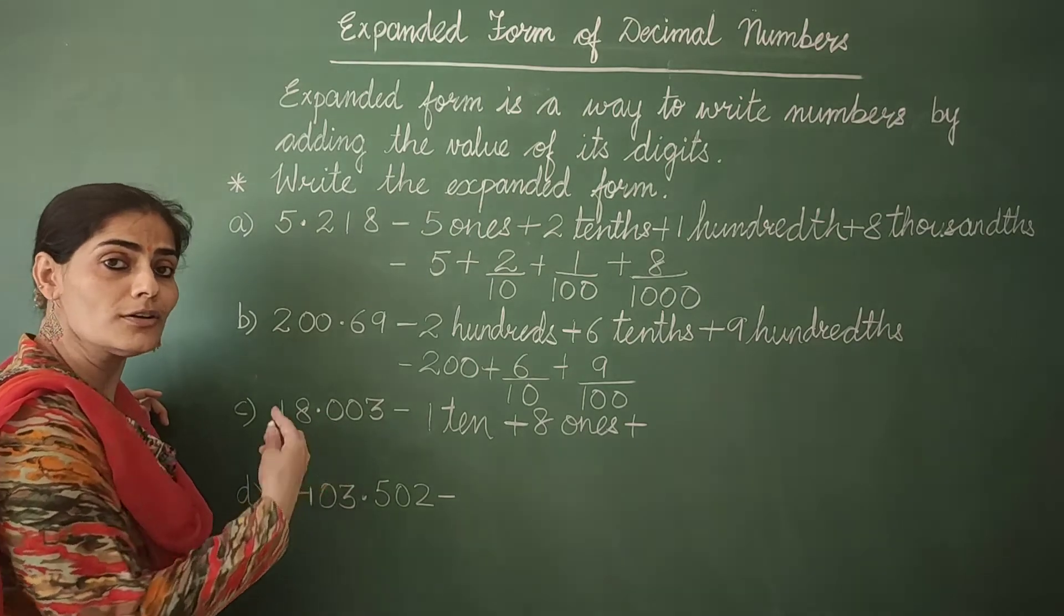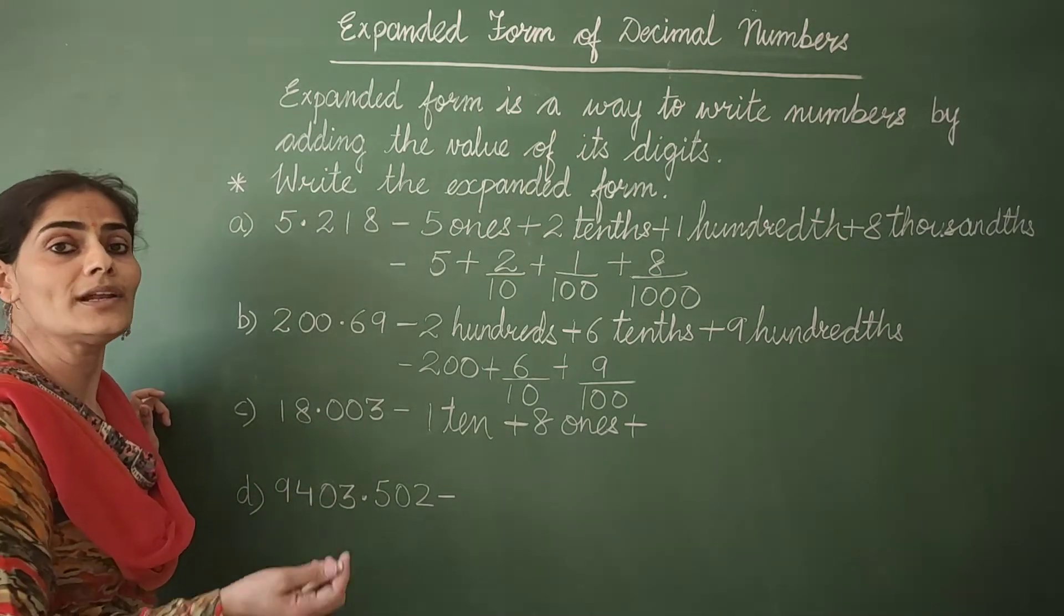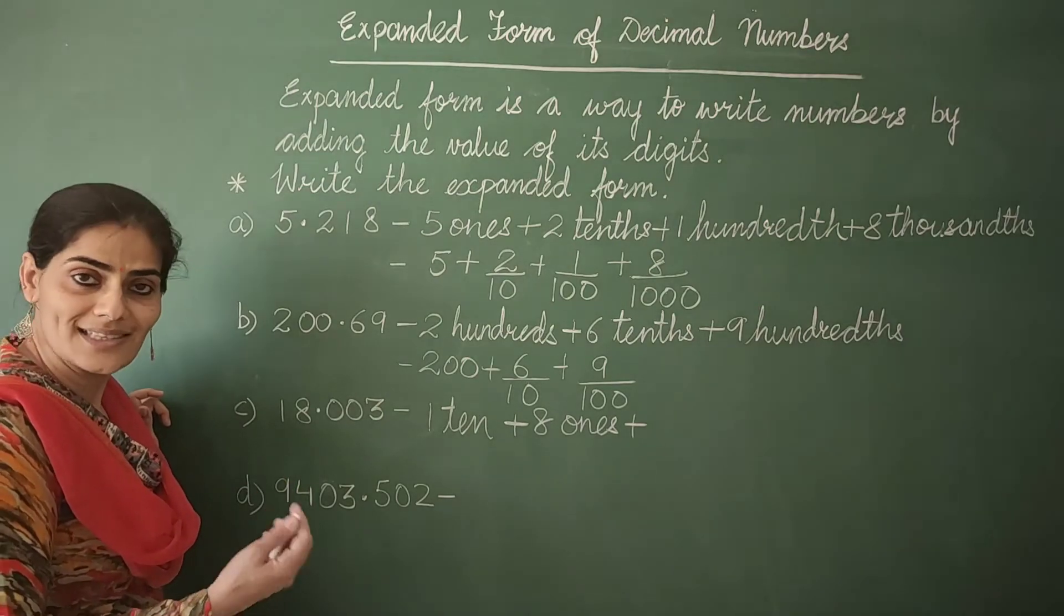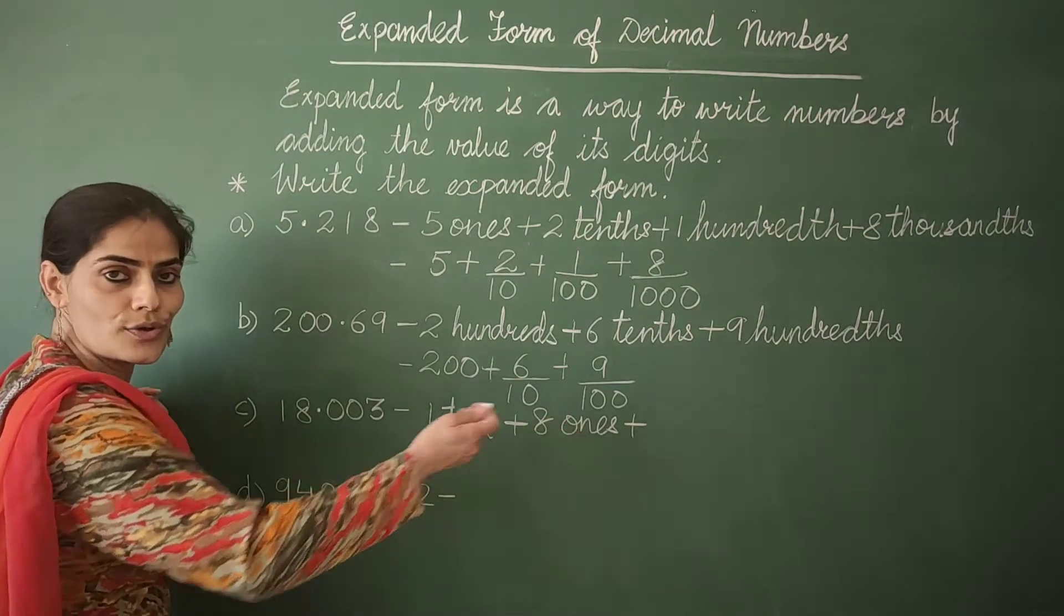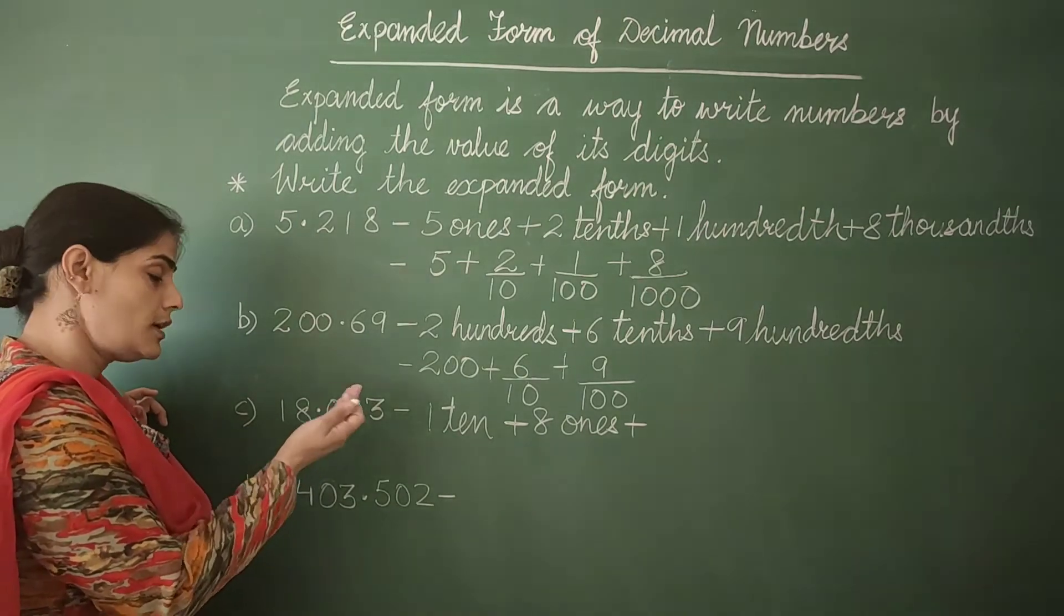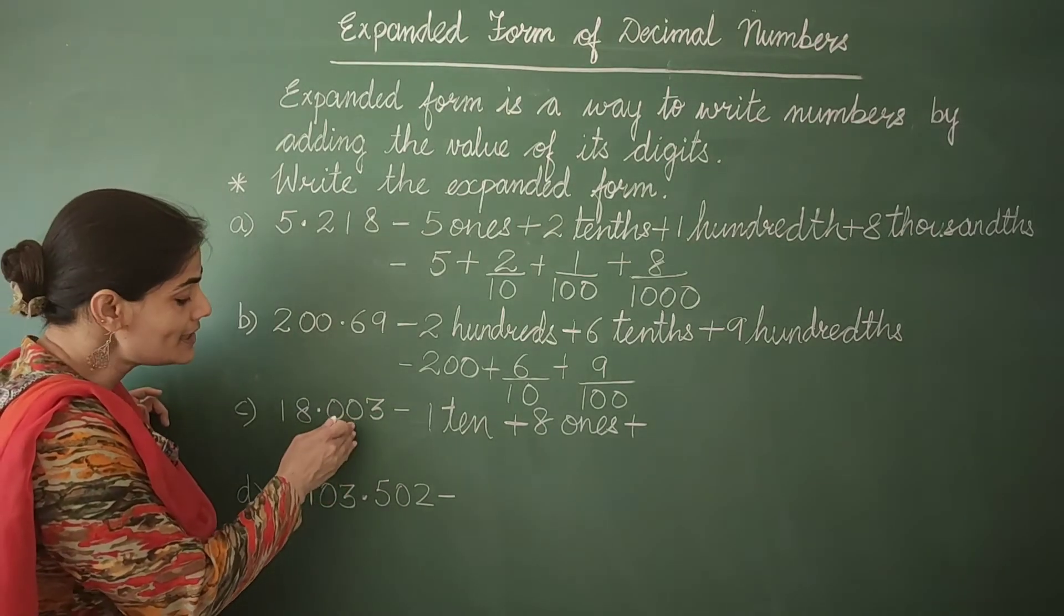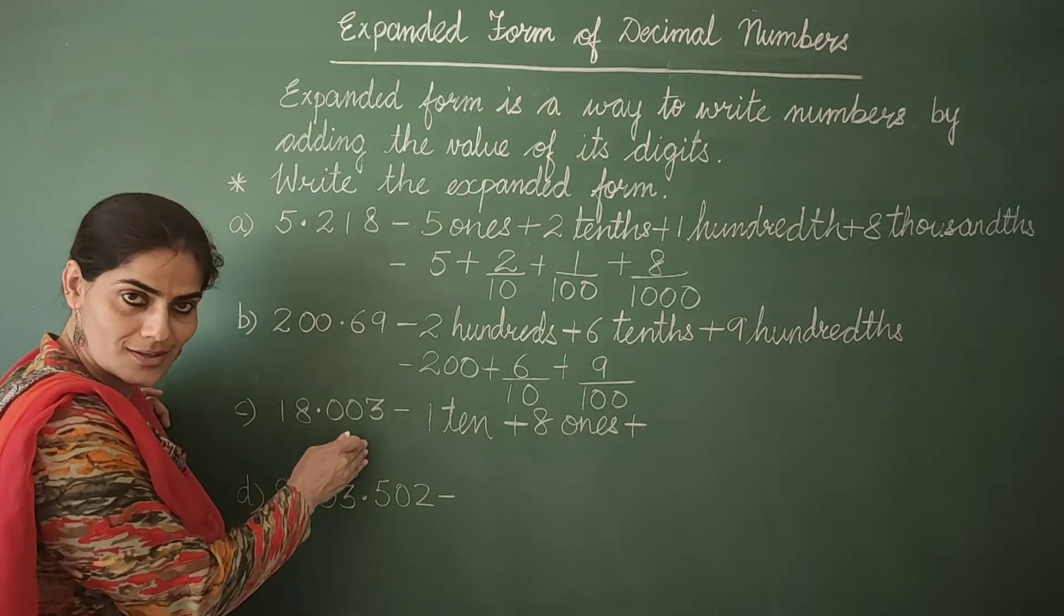This will be 0 tenths. And 0 divided by any number will give you the quotient as 0. So it's not going to affect the answer. Again, it's your choice. If you want, you can write. If you don't want, then move to the next digit. This is 0 hundredths.